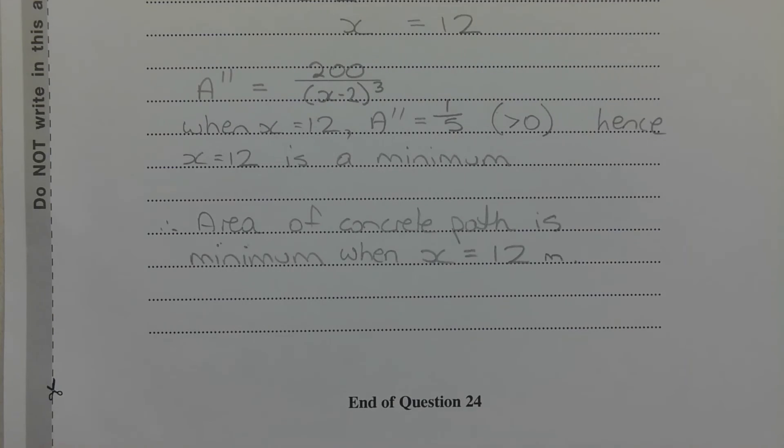The last step is to show that when x equals 12, the area of the concrete path is a minimum. And we can do that by finding the second derivative, A double dash. And that equals 200 over x minus 2 in brackets cubed. Substituting x equals 12 for x in the second derivative. So in other words, when x is equal to 12, the value of the second derivative, A double dash, is equal to 1 over 5, which is positive. Hence, x equals 12 is a minimum. Therefore, the area of the concrete path is minimum when x equals 12 meters.